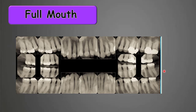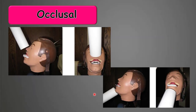A full-mouth radiography is composed of a series of radiographs, including a combination of periapical radiographs plus bite wings of both sides covering all of the teeth in the jaw. It is usually taken when we need to assess all of the teeth in detail, so it includes many periapical and bite wing radiographs.